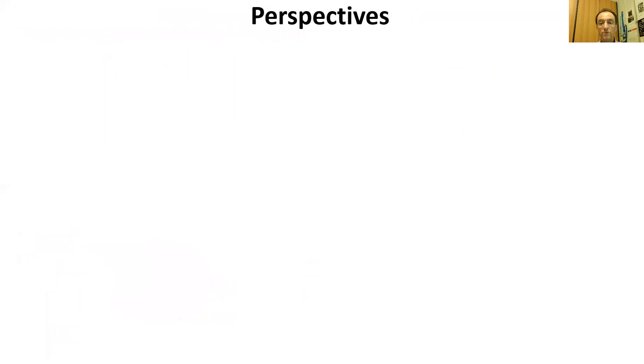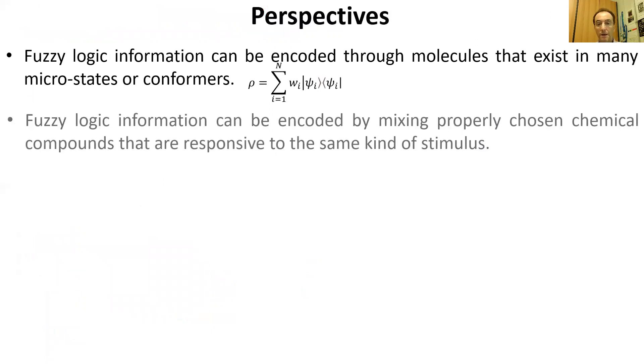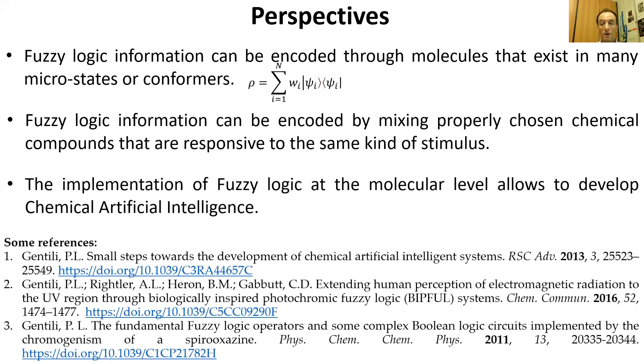In conclusion, fuzzy logic information can be encoded through molecules that exist in many microstates or conformers. Alternatively, it can be encoded by mixing properly chosen chemical compounds that are responsive to the same kind of stimulus. The implementation of fuzzy logic at the molecular level allows the development of chemical artificial intelligence. In other words, we might expect to approach some performances of human intelligence by processing fuzzy logic at the molecular level. For more information, please have a look at these selected references. I thank all of you for your attention.